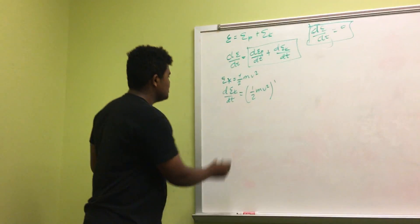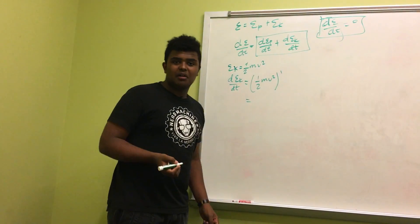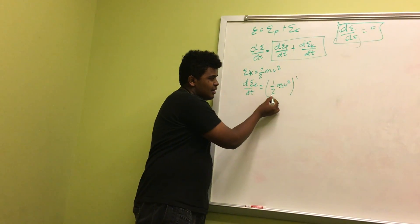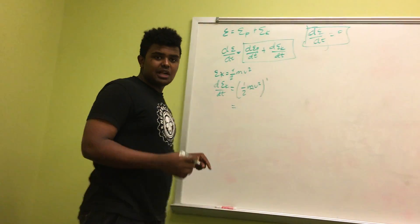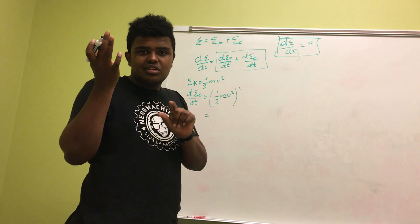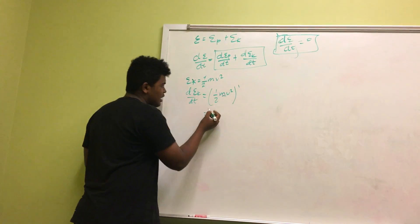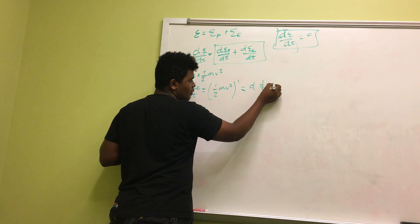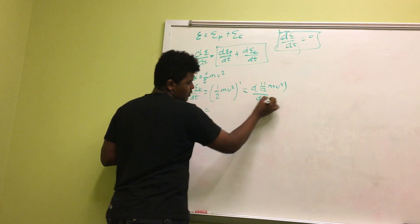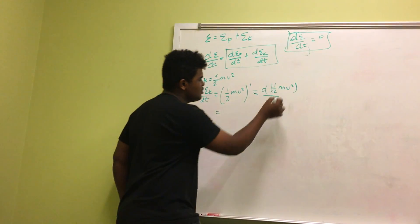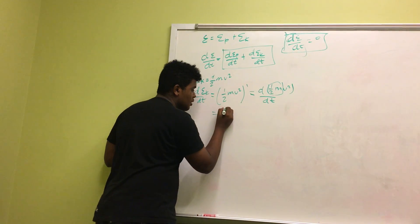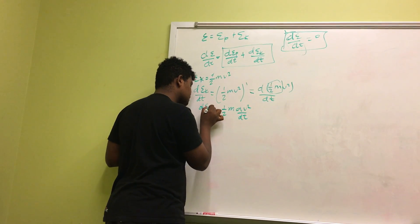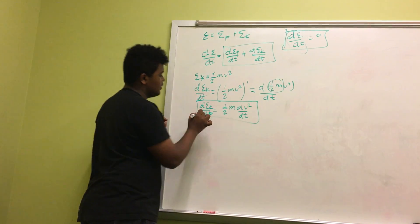It's the rate of change because mass is constant. So we have one-half m times dv squared over dt. This is the equation for the rate of change of kinetic energy. Let's call this equation 1. Now let's look at the potential energy side.